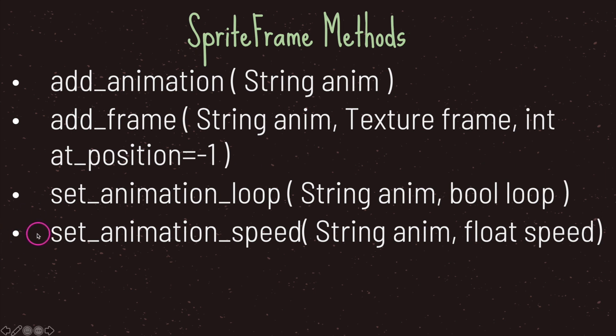The last method is called set_animation_speed. It takes the animation name as the first argument and a float value as the second, specifying how many frames per second you would like your animation to play.